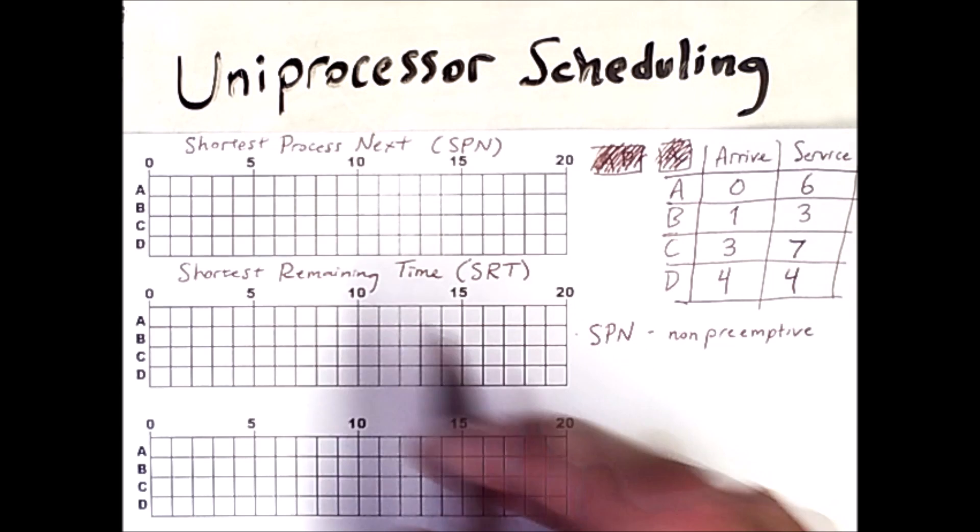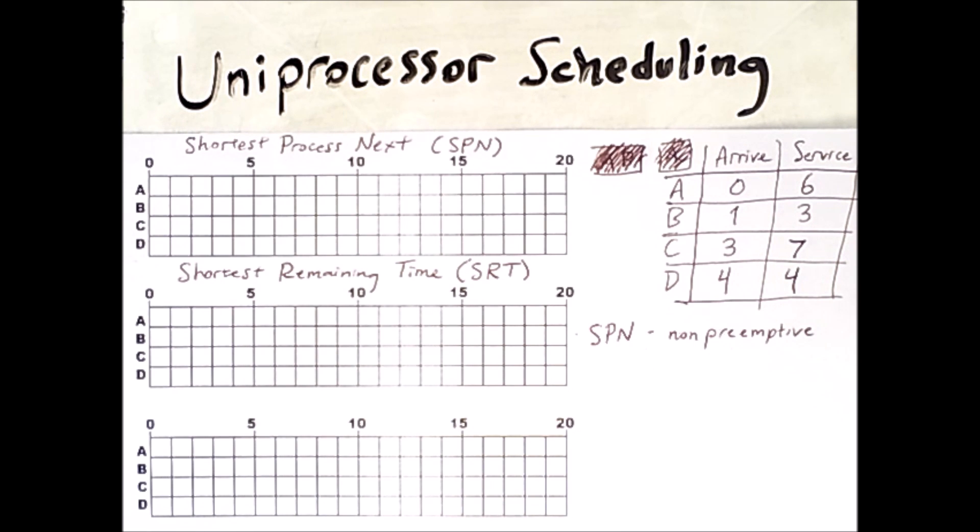This means that Shortest Process Next simply runs whichever process has the shortest service time at the time when it makes decisions. Now when does it make decisions? It makes decisions whenever the currently running process finishes.